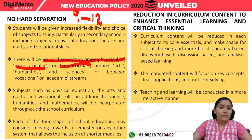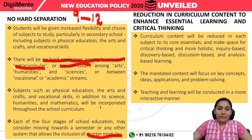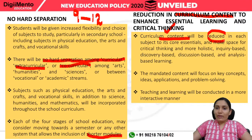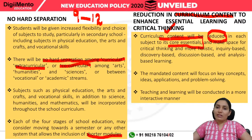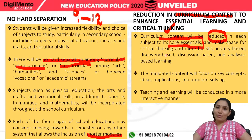Each of the four stages of school education may consider moving towards a semester or any other system that allows inclusion of shorter modules. Curriculum content will be reduced to enhance essential learning and critical thinking — it will be reduced to its core essentials so there is more space for co-curricular and extracurricular activities and critical thinking.